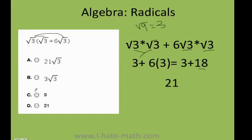You also could have done it this way. Look, there is an invisible one right here. Since these two radicals are the same, I can mix them. And I can say 1 plus 6, and that will be 7 square root of 3. Then, I just have to multiply the square root of 3 times 7 square root of 3.